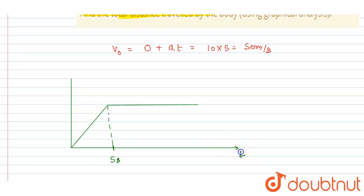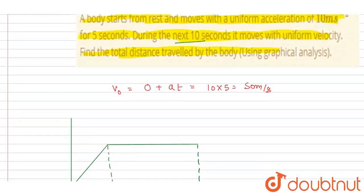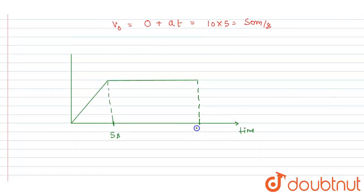If you see here, this time is 5 seconds, and this time is 15 seconds. For the next 10 seconds it moves at constant velocity, so 5 plus 10 will be 15 seconds. And if you see this point, this is v naught, that is 50 meter per second.